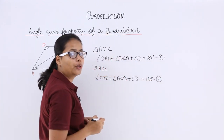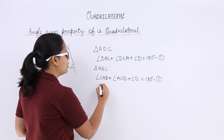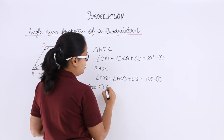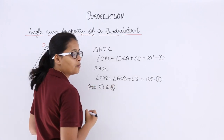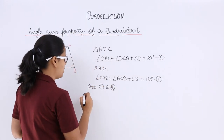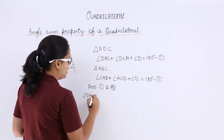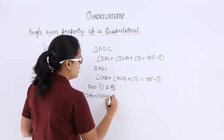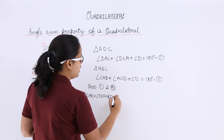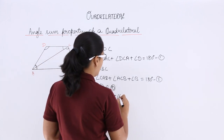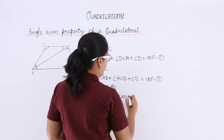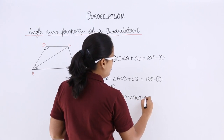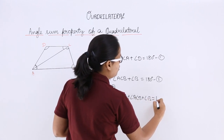Now what you will do? You will add equation 1 and equation 2. So what you will get? Start adding: angle DAC plus angle DCA plus angle D, plus angle CAB plus angle ACB plus angle B, is equal to 180 plus 180.